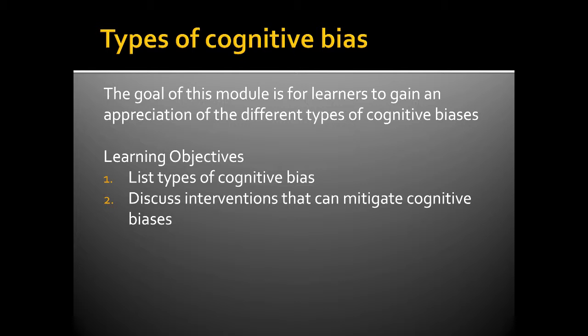The goal of this module is for learners to gain an appreciation of the different types of cognitive biases. The learning objectives are to list types of cognitive bias and discuss interventions that can mitigate cognitive biases.